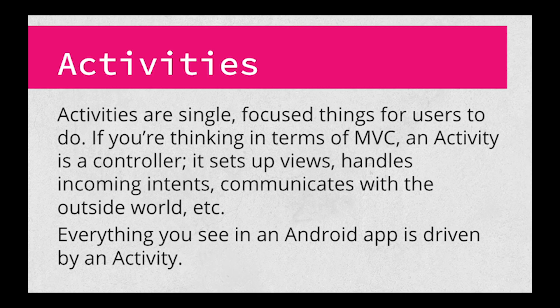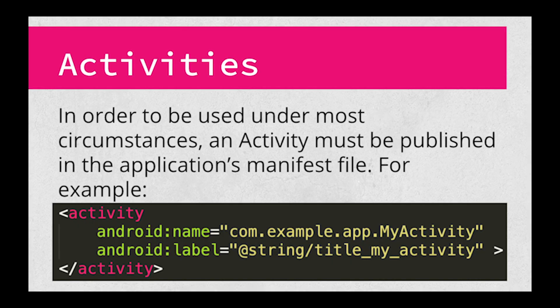Each activity acts as a controller, or a view controller in the MVC sense, where it sets up the views, talks to the outside world, and generally manages what's going on. Everything you see in an Android app is driven by an activity. Under most circumstances, each activity needs to be published by the application's manifest file — you can see an example of that on the screen right now. Each one has a name which corresponds to the class in the application, and a set of properties that controls how it works, what permissions are required, and so on.